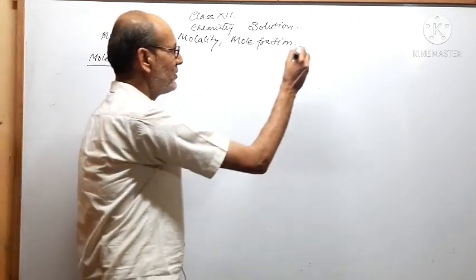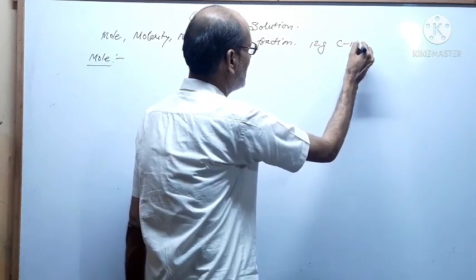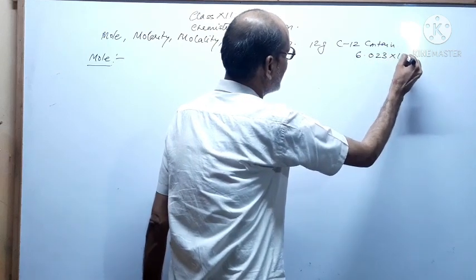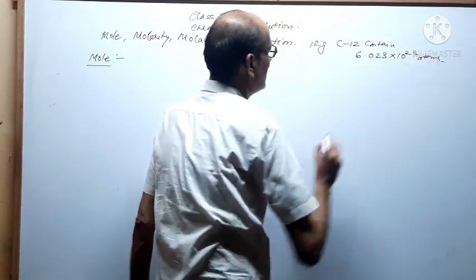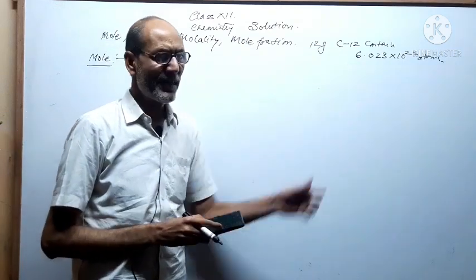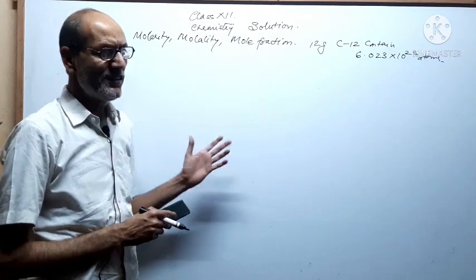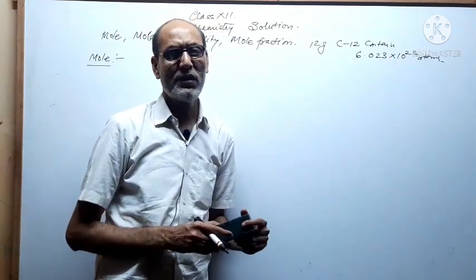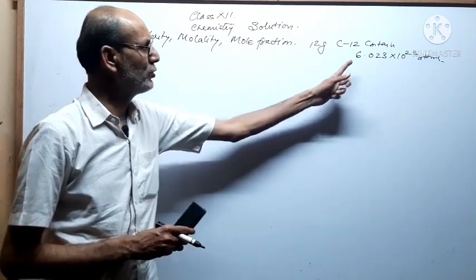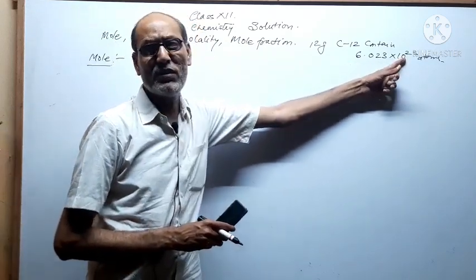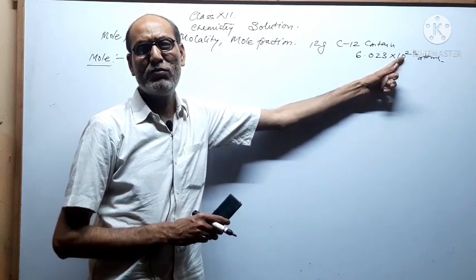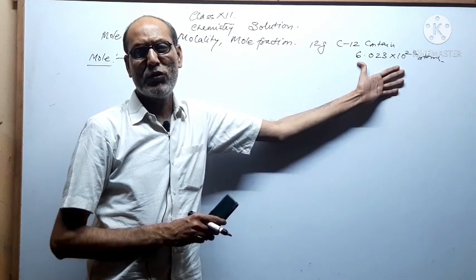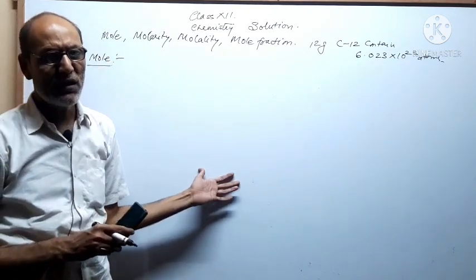12 gram carbon-12 contains 6.023 × 10²³ atoms. This number is called Avogadro's number — the number of entities, that means atoms, ions, or molecules, equal to 6.023 × 10²³. If you have taken 6.023 × 10²³ atoms, ions, or molecules of any species and you weigh these entities, that mass will be equal to one mole.